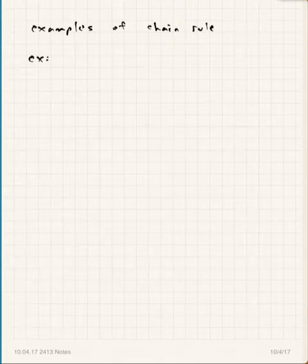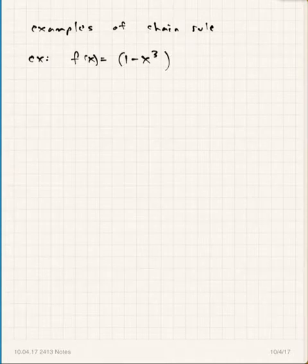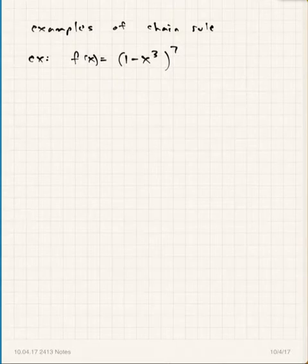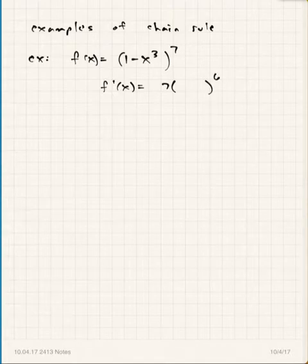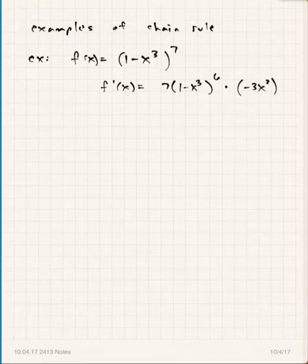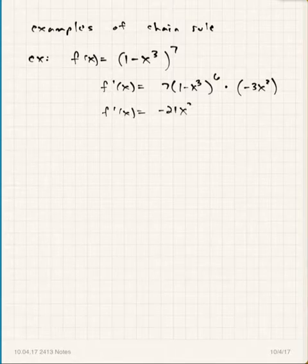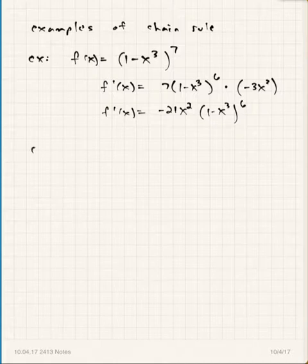First chain rule example: f(x) = (1 − x³)⁷. This is a power function of (1 − x³), so f′(x) is the derivative of the outside — 7 times something to the sixth — times the derivative of the inside, which is −3x². So f′(x) = −21x²(1 − x³)⁶.